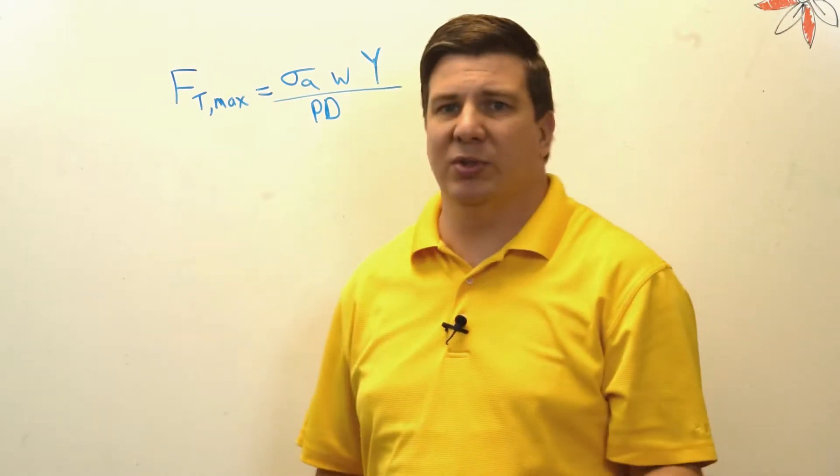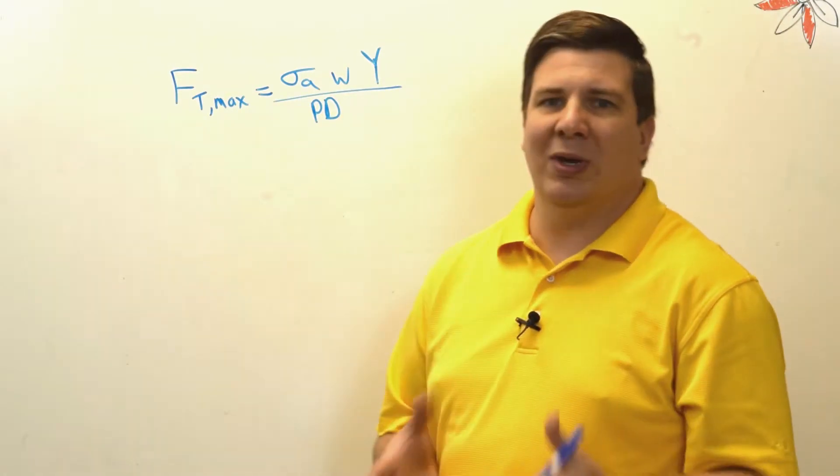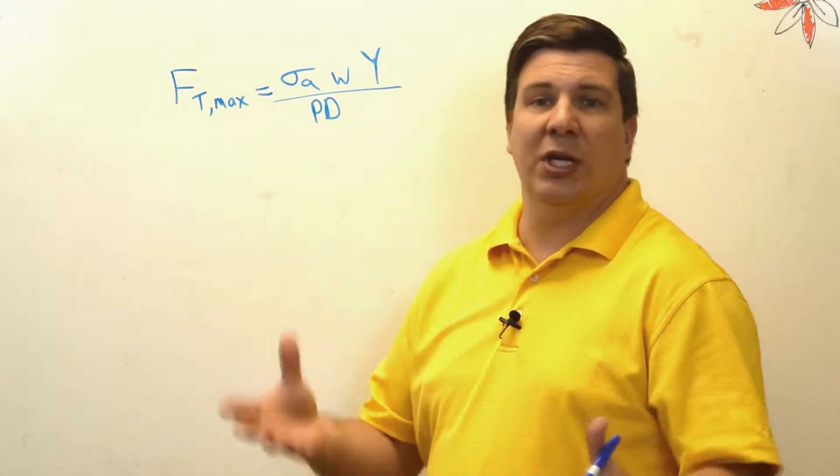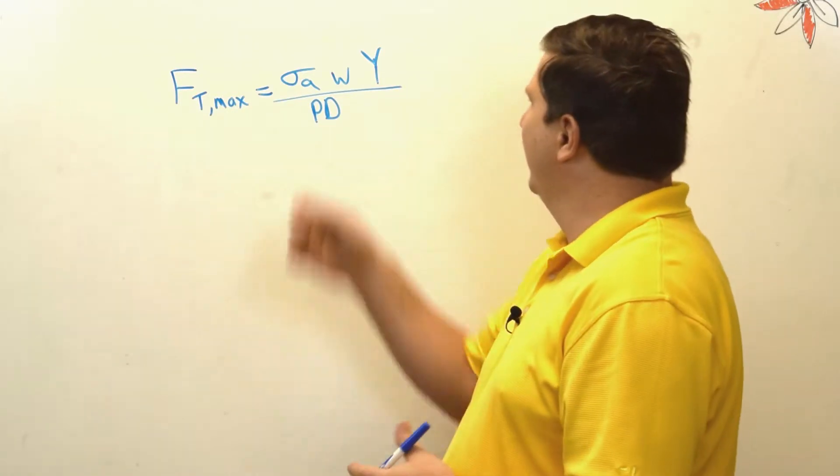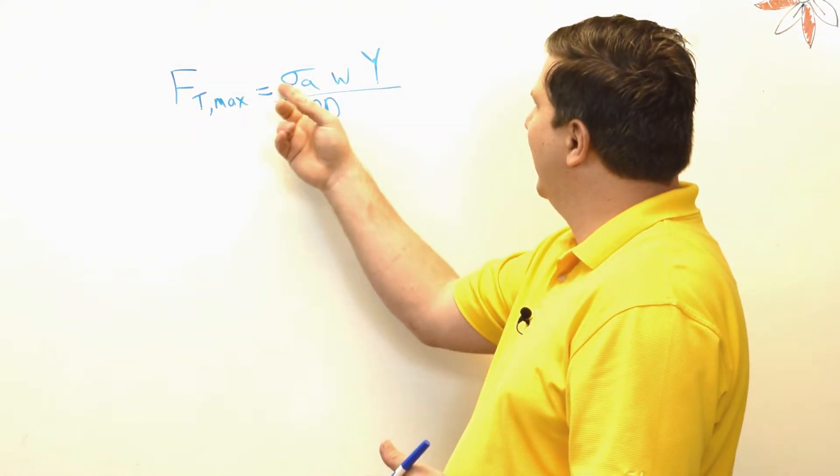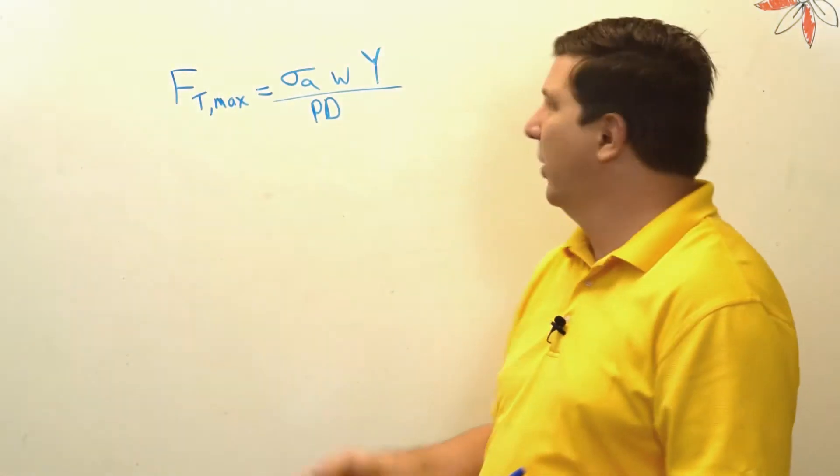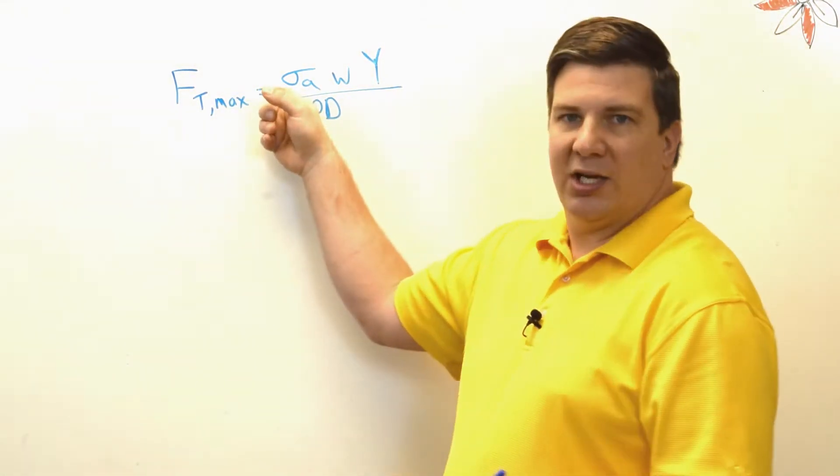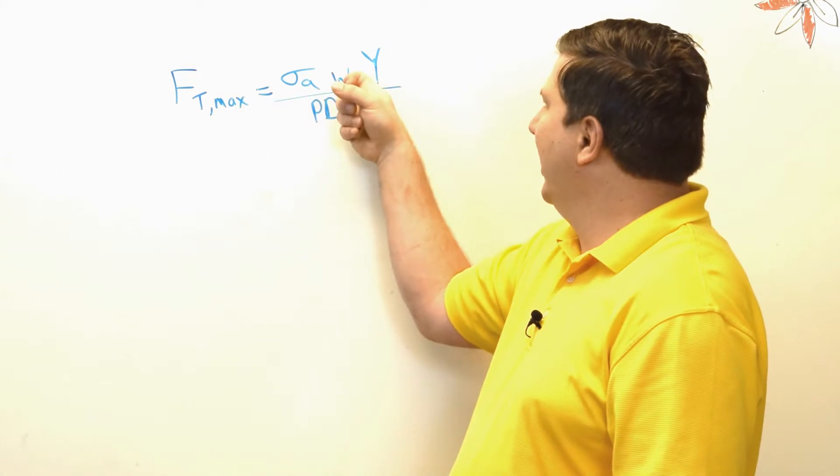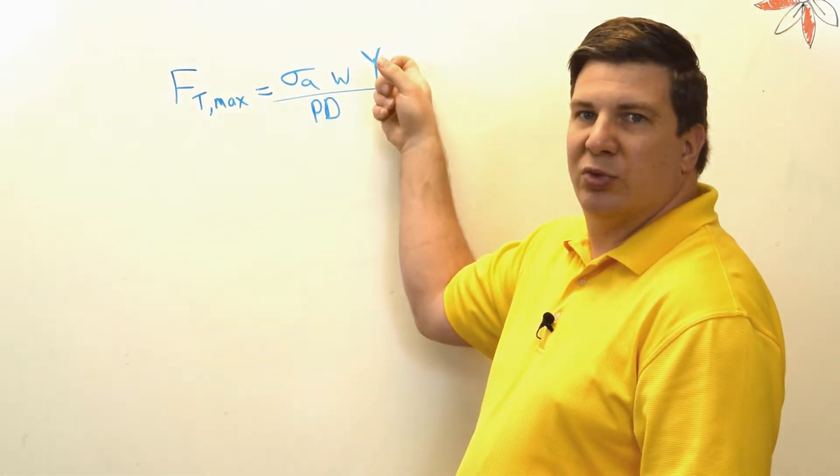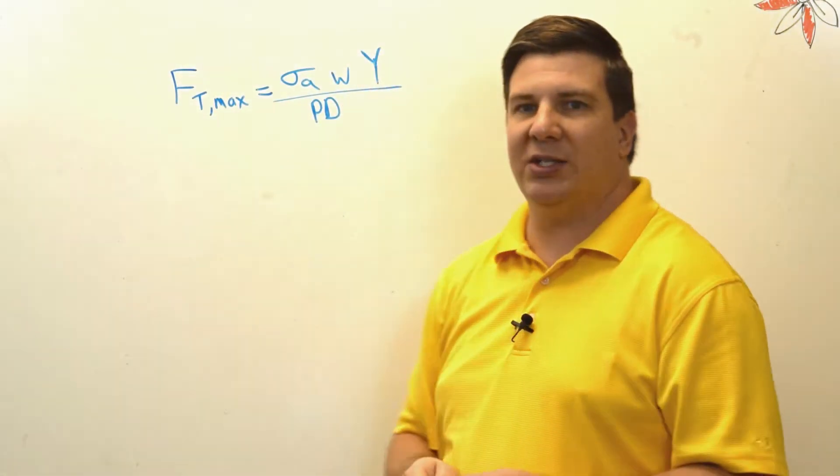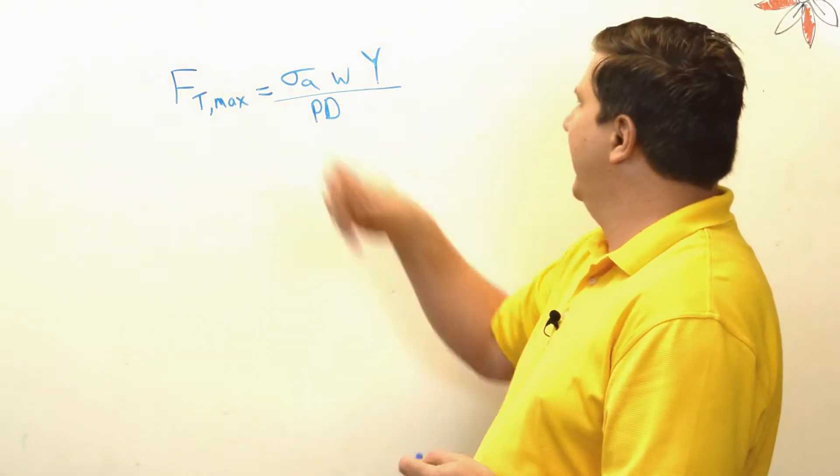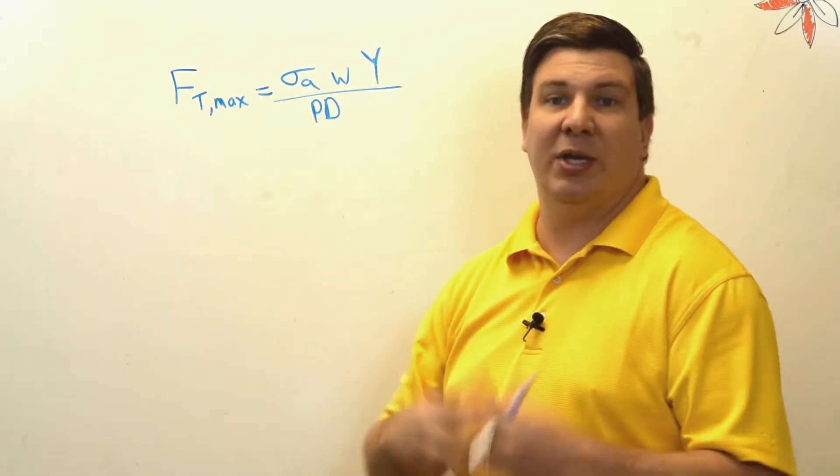Very simple. If you want more tangential force, you minimize this and you maximize all of these. So I can get a gear with higher strength, I can make my gear wider, I can improve my Lewis form factor, and I could decrease my pitch diameter.